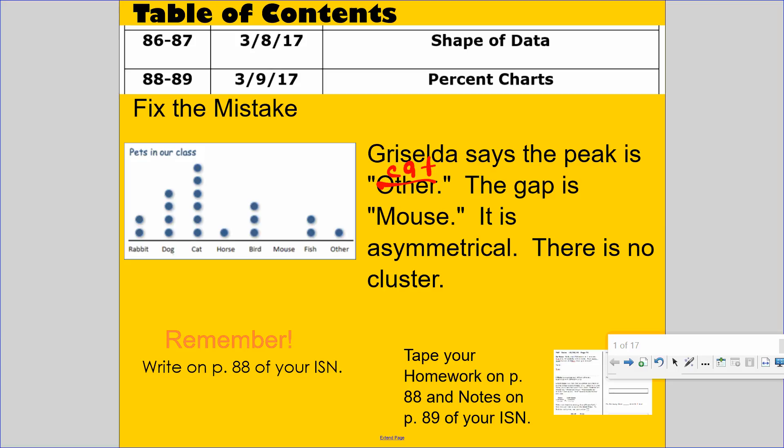There's a gap at mouse. I agree with that. It is asymmetrical. That means it's not symmetrical. I'm okay with that because the left side does not look like the right side. There is no cluster. That is wrong. There is a cluster from rabbit to bird, a grouping of numbers, and from fish to other.